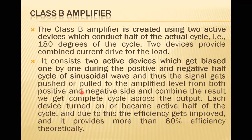Now let us look at the Class B amplifier. The Class B amplifier uses two active devices, each conducting half of the actual cycle — that is 180 degrees. Two devices provide combined current drive for the load. Each device is biased one by one during the positive and negative half cycles of the sinusoidal wave. The signal gets pushed and pulled to the amplified level from both positive and negative sides, and combining the result gives a complete cycle at the output. Each device turns on for half the cycle, improving efficiency to more than 60 percent theoretically.